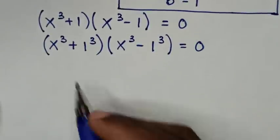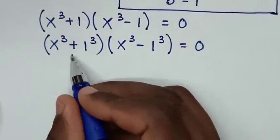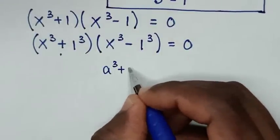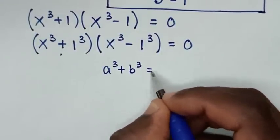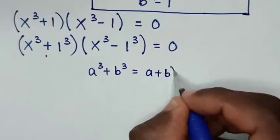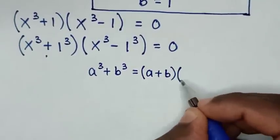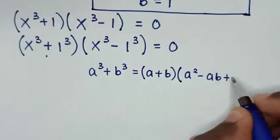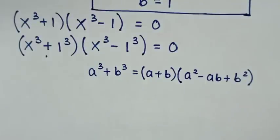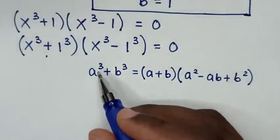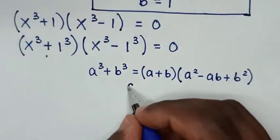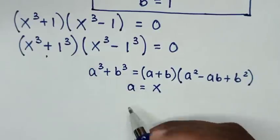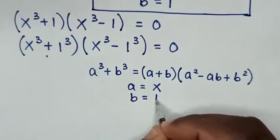This part of the equation is in the form of a perfect cube. So we'll apply the rule: a power 3 plus b power 3 equals (a + b)(a² - ab + b²). When we compare a power 3 with x power 3, then a equals x. And when we compare b power 3 with 1 power 3, then b equals 1.